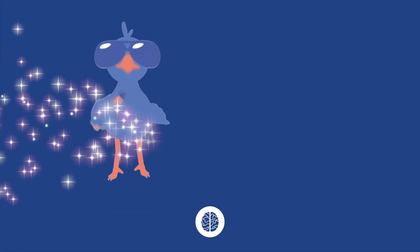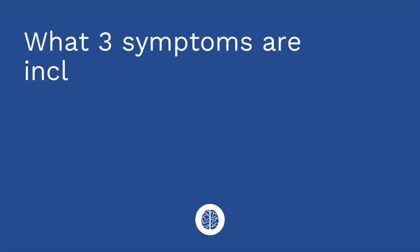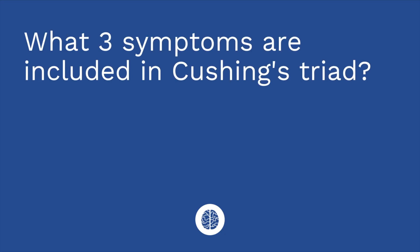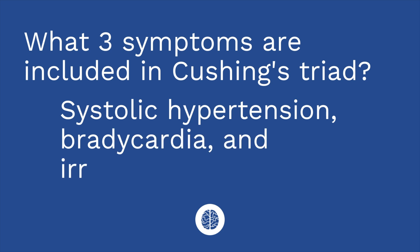Time for a quiz — I have three questions for you. First question: what three symptoms are included in Cushing's triad? The answer is systolic hypertension, bradycardia, and irregular breathing.